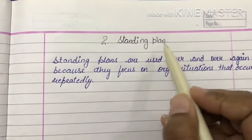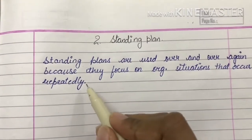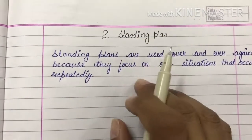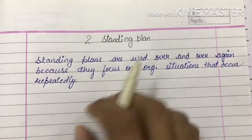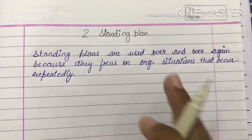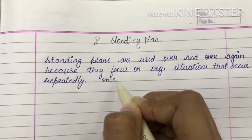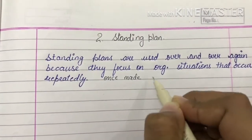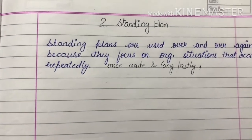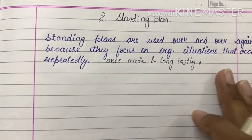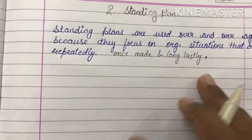Standing plans are used over and over again because they focus on organizational situations that occur repeatedly. Standing plans में हम उन plans को use करते हैं जो organization में situations repeatedly occur होते हैं उनके ऊपर बनाये जाते हैं. They are usually made once and retain their value over a period of years. इनके revision में updates और changes हो सकते हैं. That is why they are also called repeated use plans.